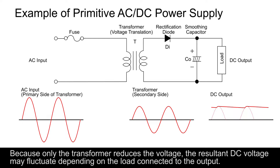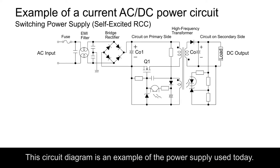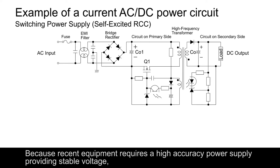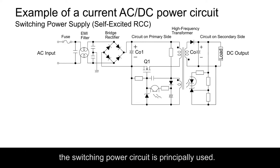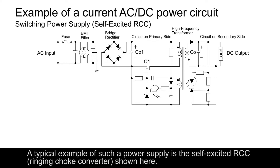Because only the transformer reduces the voltage, the resultant DC voltage may fluctuate depending on the load connected to the output. This circuit diagram is an example of the power supply used today. Because recent equipment requires a high accuracy power supply providing stable voltage, the switching power circuit is principally used. A typical example of such a power supply is the self-excited RCC, ringing choke converter, shown here.